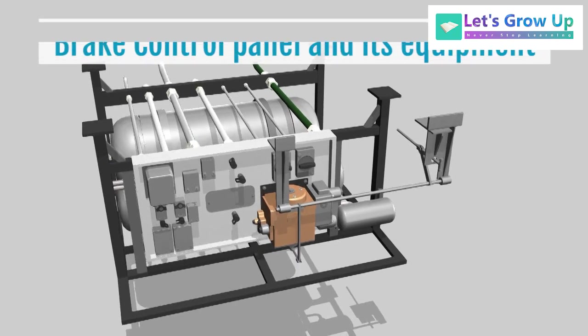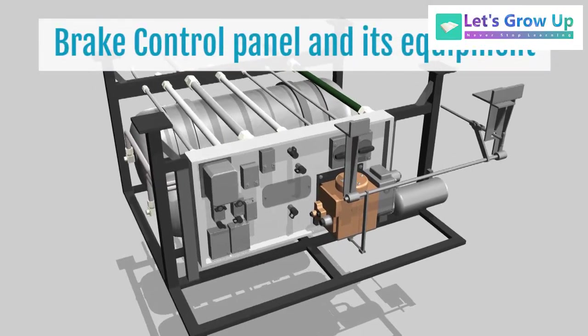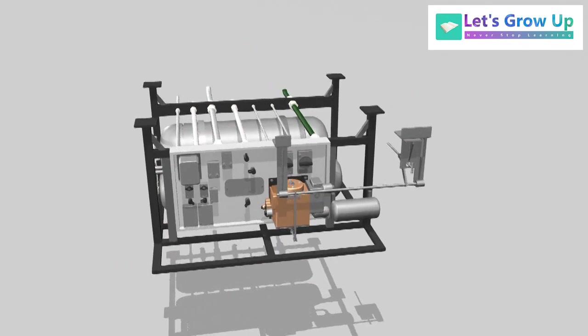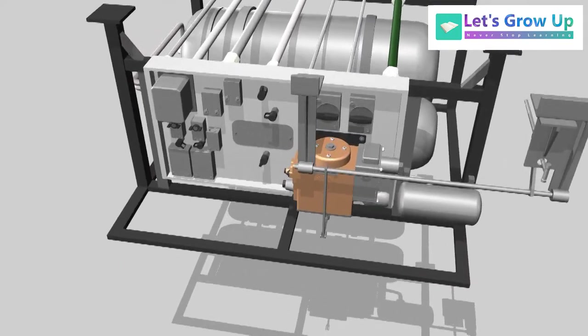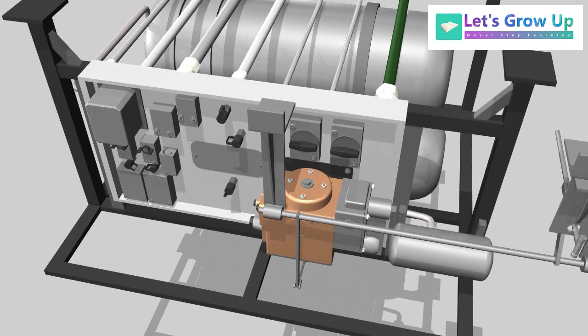In this video, we will learn about the brake control panel and its equipment. The brake panel module is a fabricated stainless steel frame and contains an aluminum manifold, to which components are attached. Let's learn the components' names.